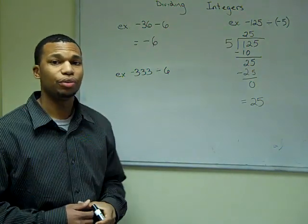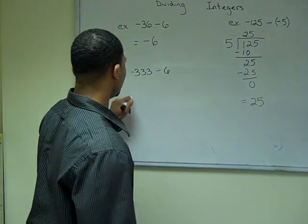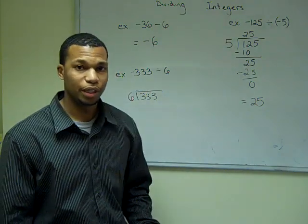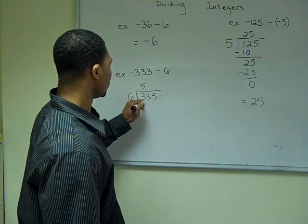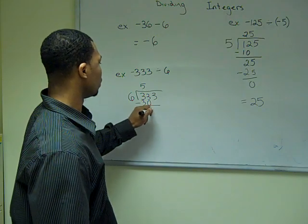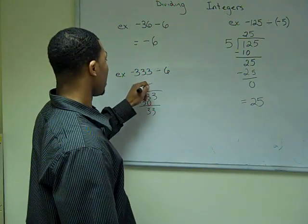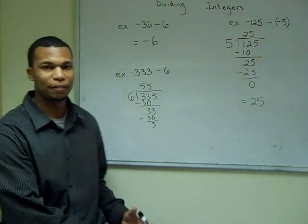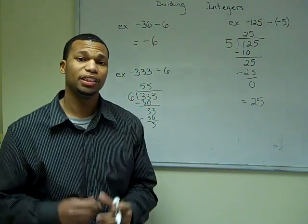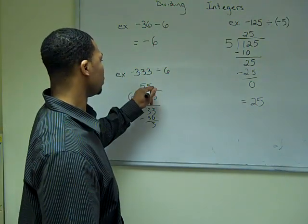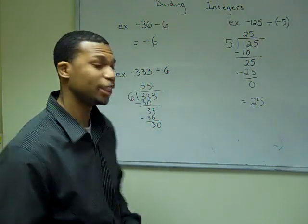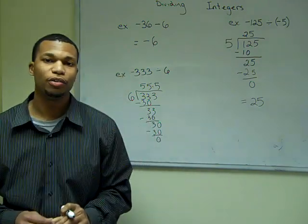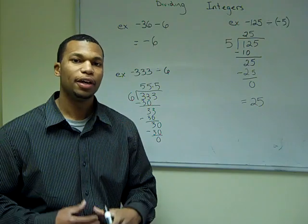Now let's go to the next example. We have negative 33 divided by 6. We're going to use long division. 6 can go into 33 five times. We no longer have any numbers, so we ask ourselves: can 6 go into 3? Since the answer is no, we add a decimal point and then a zero after 3. Now 6 can go into 30 five times. So our final answer, since we have different signs, is negative 5.5.